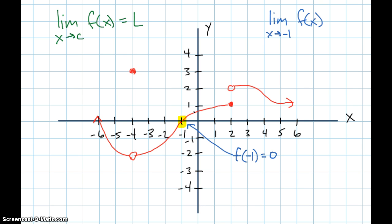I'm approaching Y equals zero from the left, and I'm approaching Y equals zero from the right. Both of those have to line up for the limit to exist. That's enough information to say that the limit as X approaches negative one of f(X) is zero — that's the value Y is approaching as X approaches negative one in both directions.